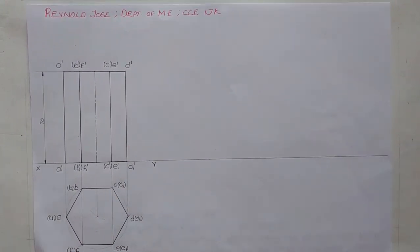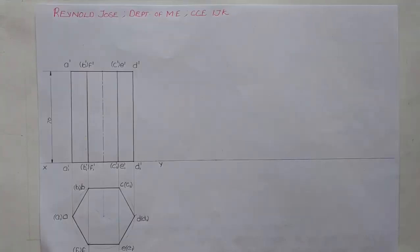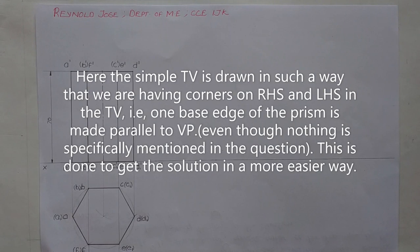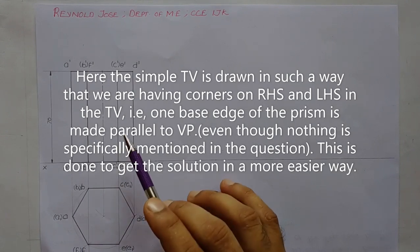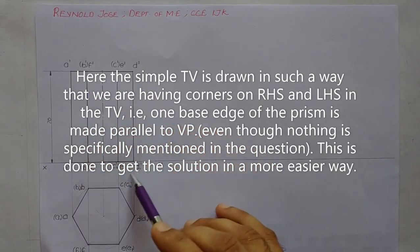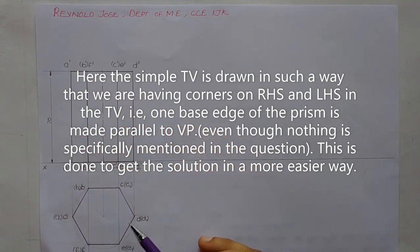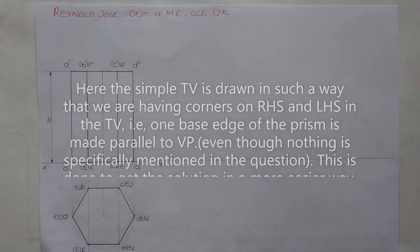We have already drawn the symbol front view and symbol top view of this hexagonal prism. The symbol top view is drawn with one edge parallel to the XY line, meaning it is parallel to the vertical plane. The outline of the front view is a rectangle and the top view is a regular hexagon.